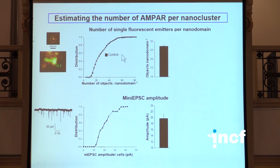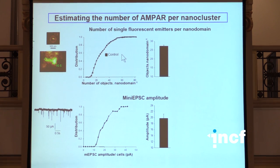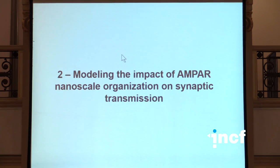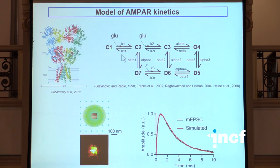That's about the amount of data we have so far on the organization of these receptors. And the question we wanted to ask then is what's the impact on synaptic function of this organization of the receptors? We thought that actually modeling could be pretty informative to try to understand what could be the impact of this receptor organization on synaptic transmission. So we took a model that we had developed based on some published models already a while ago, taking a pretty classical kinetic scheme of AMPA receptors.